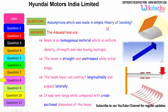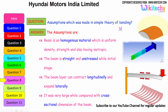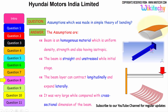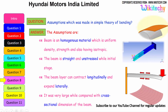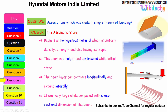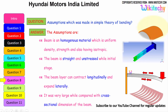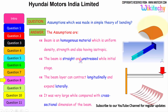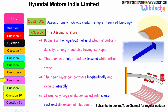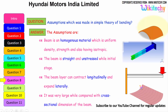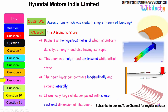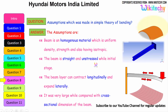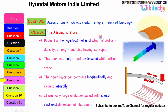What are the assumptions made in the simple theory of bending? The beam is made of a homogeneous material with uniform density, uniform strength, and isotropic properties. The beam is straight and unstressed in its initial stage. The beam can contract longitudinally and expand laterally. The span is very large compared with the cross-sectional dimension of the beam.